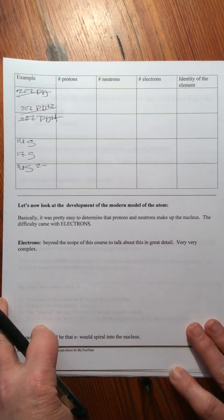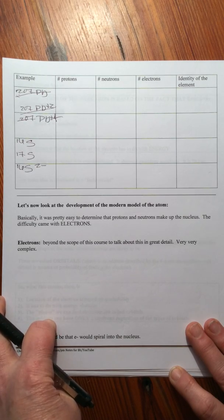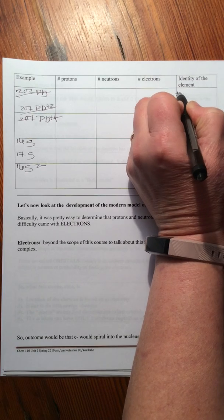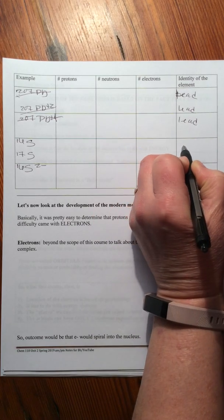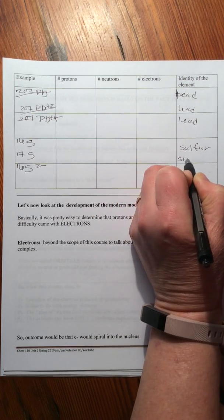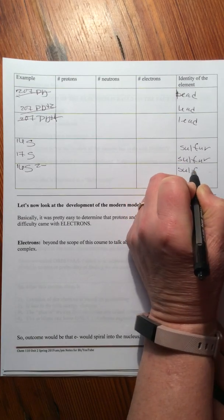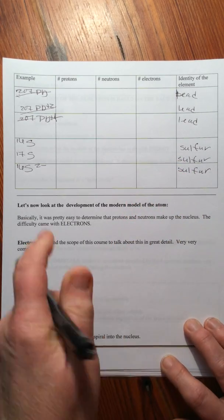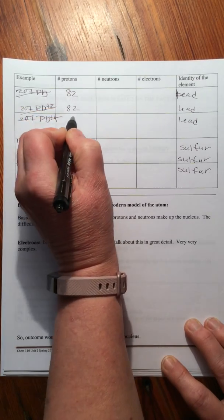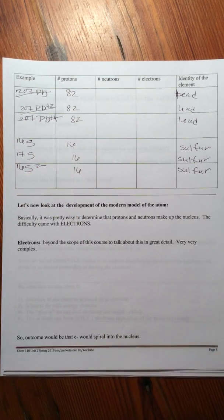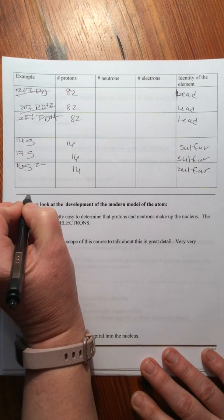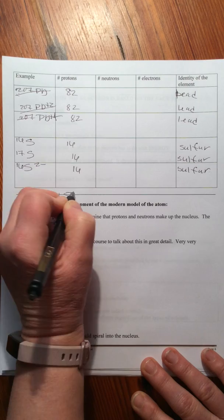And I will do it quickly. See if I can get this all on one segment here. This is lead, this is lead, this is lead. Sulfur, sulfur, sulfur. Lead has 82 protons, 82 protons, 82 protons. Sulfur 16, 16, 16. And since we're at about eight minutes, what I will do is stop the video recording here. You finish the table and we will begin segment five next.